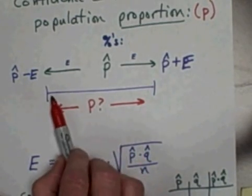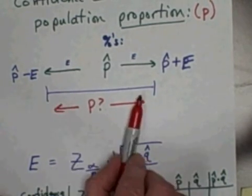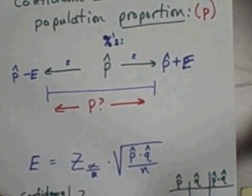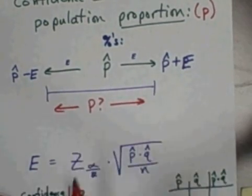And we say we're pretty sure that the actual population proportion is somewhere between P hat minus E and P hat plus E. Where is it? I don't know. It may be down closer to the low end. It may be up at the high end or maybe in the middle. But we know it's someplace, and we're pretty sure that it's someplace in this interval.